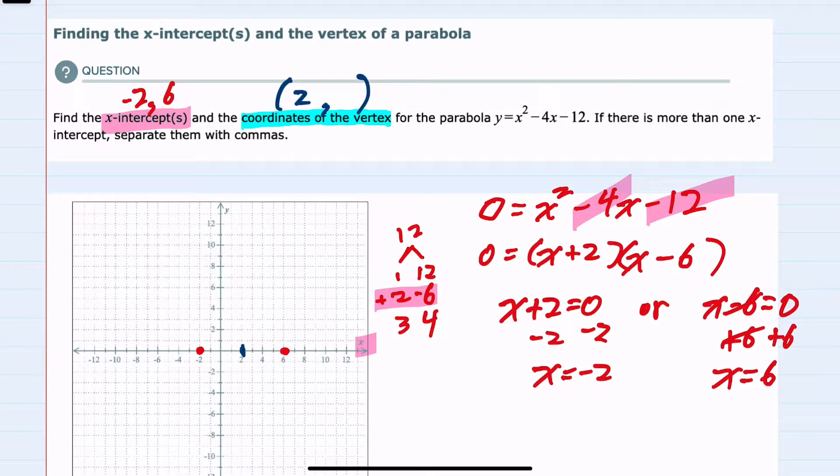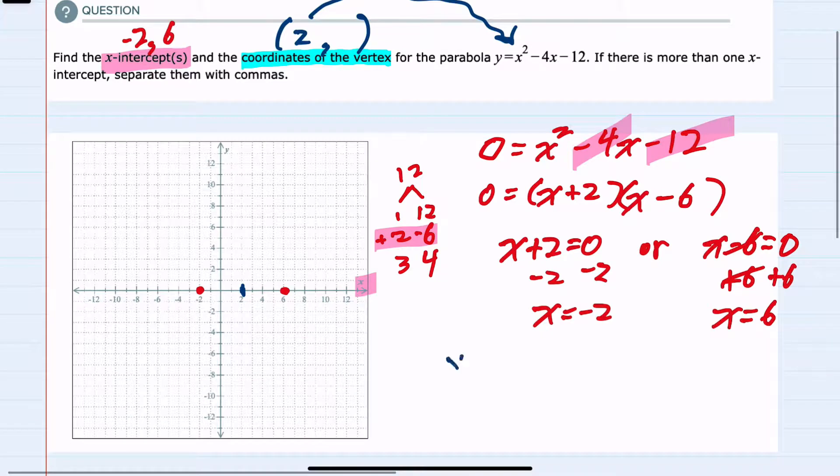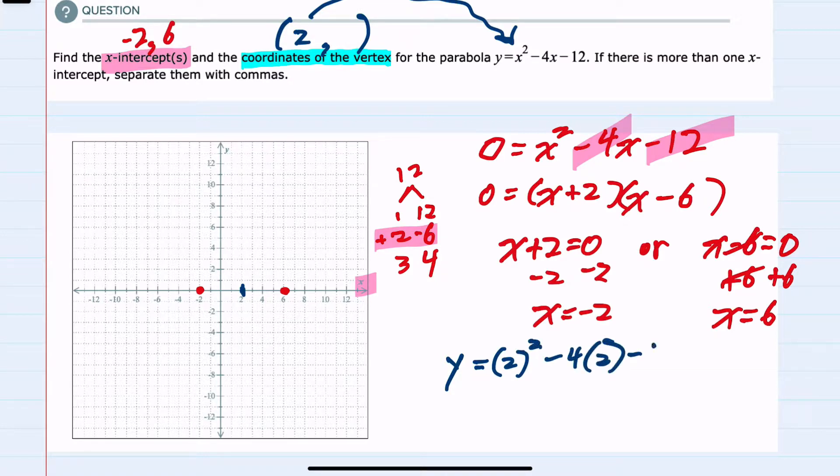I just need to find the y-coordinate by substituting that x value into the parabola. Doing so, I would have y equals x squared, here our x is 2, so 2 squared, minus 4 times x, so 4 times 2, minus 12.